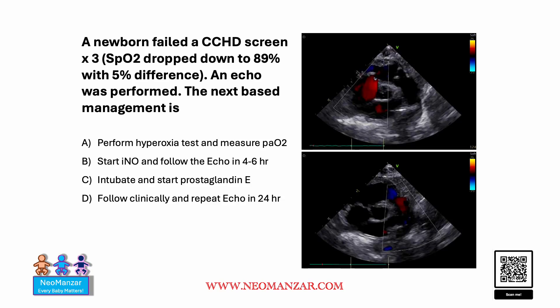Hello everyone. Let's try to solve this question together. We have a newborn infant who failed the critical cyanotic heart disease screen three times. The saturation dropped down to 89%, with a difference of 5% between the upper limbs and the lower limbs.